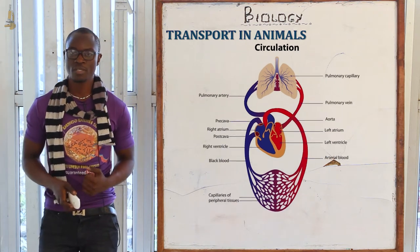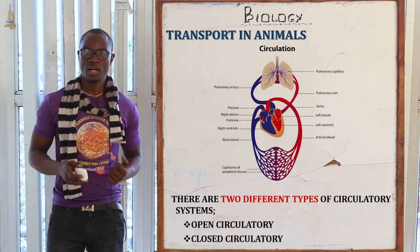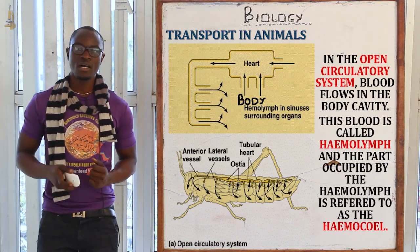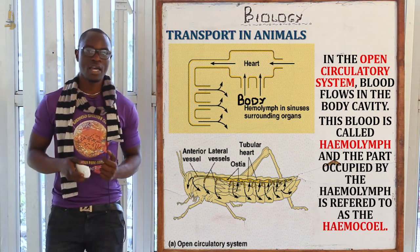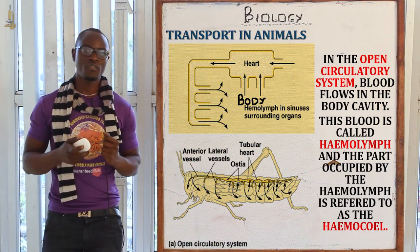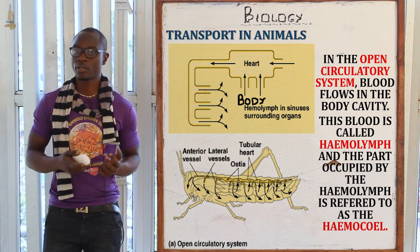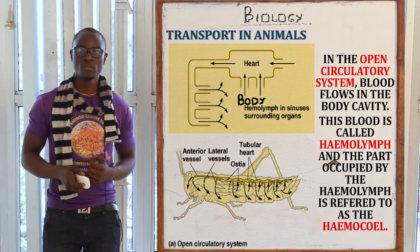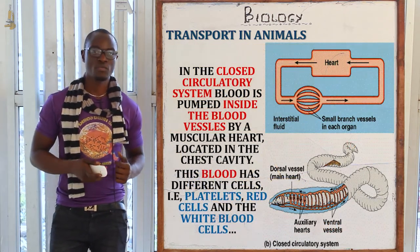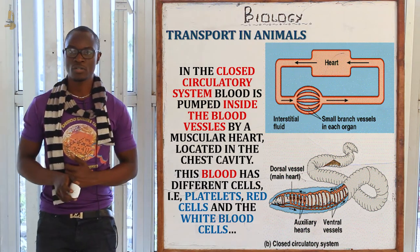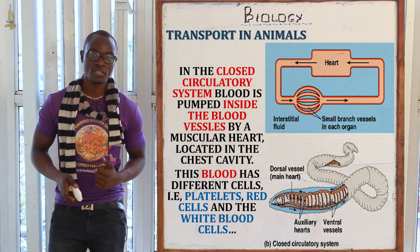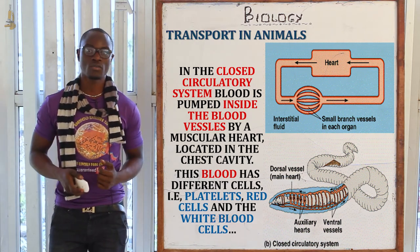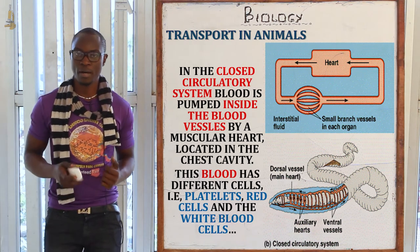Transport in animals mainly comprises two different types of circulatory systems: the open circulatory system and the closed circulatory system. In the open circulatory system, blood flows in the body cavity called the haemocoel, and the blood fluid is called the haemolymph. In the closed circulatory system, blood is pumped inside blood vessels and there is a muscular heart which facilitates the pumping of blood to all parts of the body.